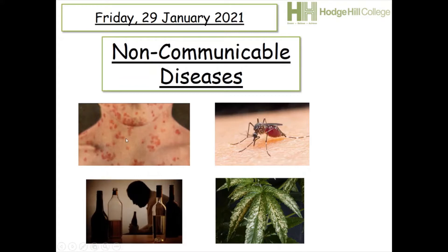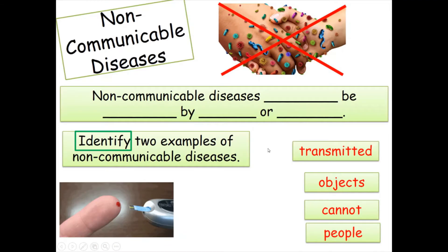Measles is transmitted person to person. Malaria is transmitted person to person via mosquitoes. Tobacco mosaic virus is transmitted from plant to plant via contact. But liver disease cannot be transmitted person to person — this means it's a non-communicable disease. If it can be transmitted, like measles, malaria, or tobacco mosaic virus, it's called a communicable disease. If it cannot be passed from person to person, it's known as a non-communicable disease.